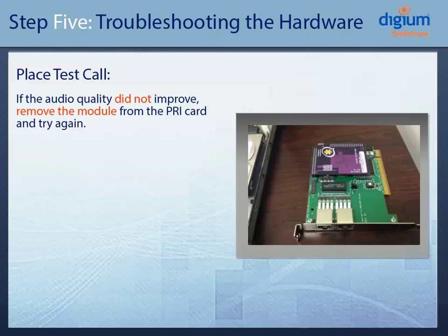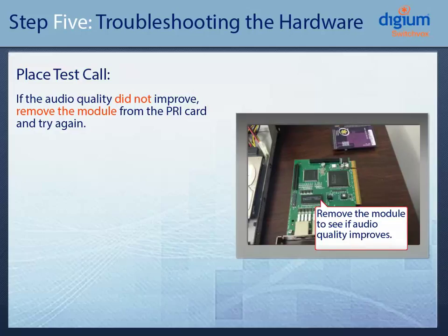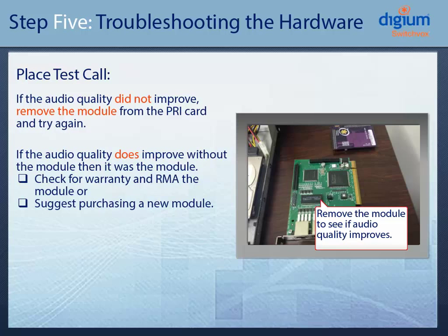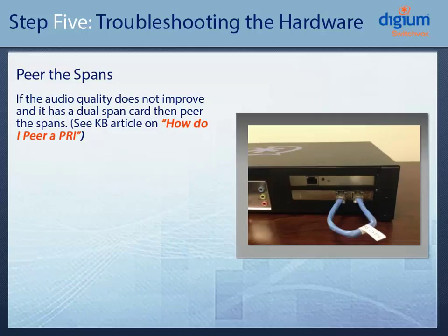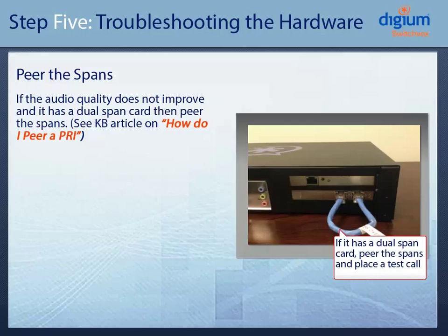After you have completed all the steps in Step 5, you will need to place a test call to see if this alleviated the issue. If reseating the PRI card did not alleviate the call quality issue, then run through all the steps in Step 5 again, but this time remove the module completely and place another test call without the echo cancellation module installed. If that alleviates the issue, check to see if the module is under warranty and RMA the module. If not, consider purchasing a new module. If the audio does not improve, check to see if they have a dual-span card and peer the spans, then place a test call between the spans. See the KB article on How do I peer a PRI.